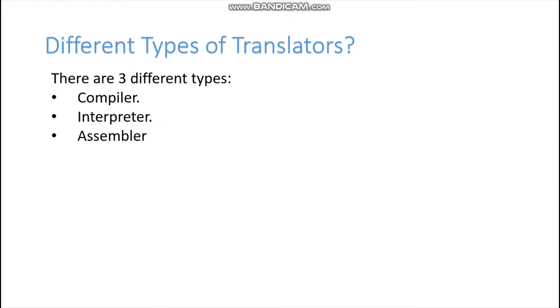There are three types of translators: the first is Compiler, the second is Interpreter, and the third is Assembler. The assembler will not be used much in our discussion because, as far as I understand, assembler relates to a low-level language.